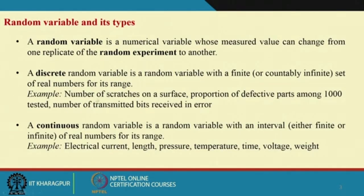Let us theoretically define what is a random variable. A random variable is a numerical variable whose measured value can change from one replicate of a random experiment to another.